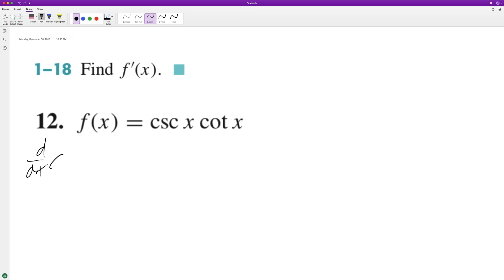So d/dx of cosecant of x times cotangent of x plus cosecant of x times the derivative of the cotangent of x.